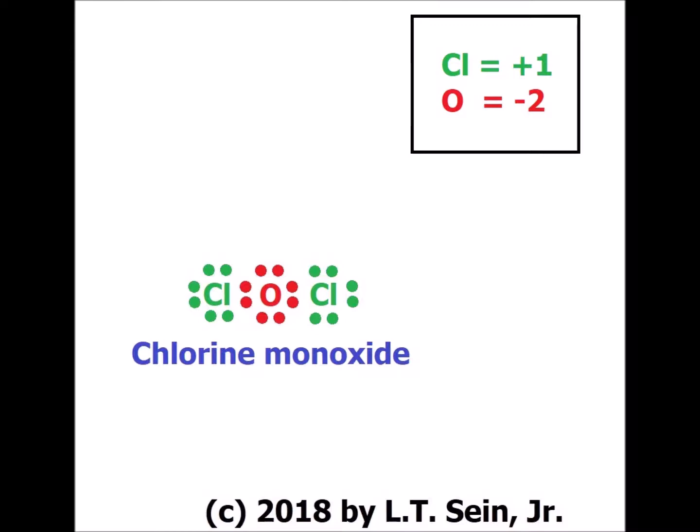The electrons in the chlorine-oxygen bond are colored red because we count them towards oxygen, which is the more electronegative of the two elements. Since the chlorines each started with seven electrons and now only have six — shown in green — each chlorine has an oxidation number of plus one. Oxygen started with six and now has eight, so it has an oxidation number of minus two.